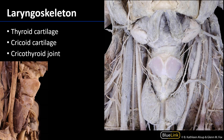To the right here we can see the anterior view of the neck with the infrahyoid muscles reflected away laterally. We can see the contents of the carotid sheath. We can also see anteriorly here the thyroid gland — that would be the right lobe of the gland and the left lobe of the gland.